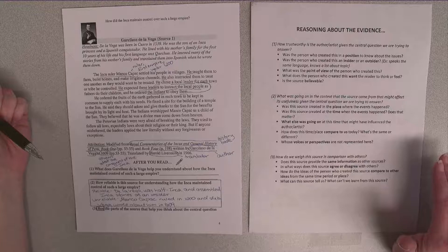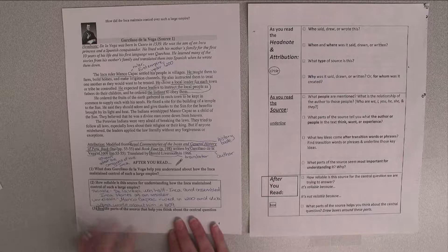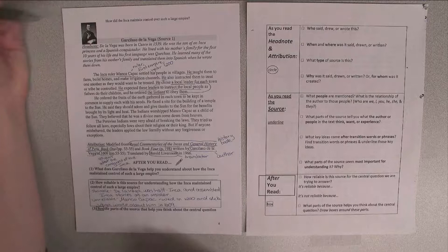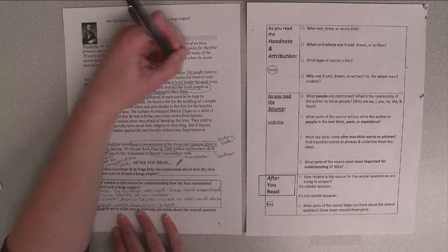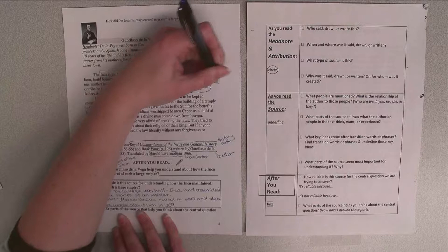Let's take a minute and see if you can find another way this source might be unreliable. Lastly, I'm going to box the parts of the source that helped me think about the central question: How did the Inca maintain control over such a large empire? So in this first paragraph, I'm going to box that the ruler settled his people in villages and that he chose a local leader for each town.